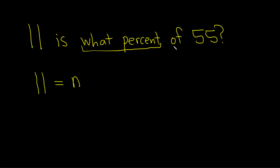'Of' means multiply. So you can use an x for multiplication or you can use a dot. I'm going to be different this time — I'm going to put a dot here like this. And then 55. So it's n times 55 because 'of' means multiply. You can use an x or you can use a dot for multiplication.